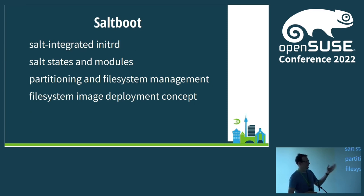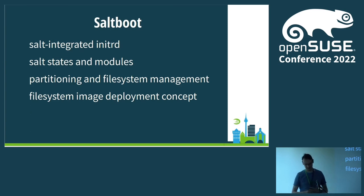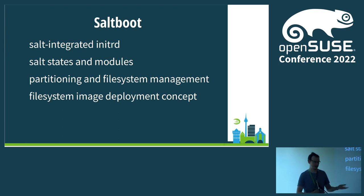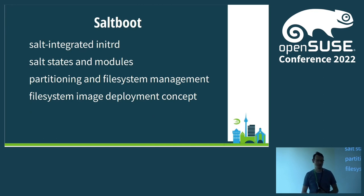Salt Boot uses these salt states to do the partitioning and file system deployment. This is one of many approaches to deploy over the network. Yesterday there was a talk about the magic carpet, which also tries to do the same thing using PXE or network boot to deploy images. This is the same concept except it's based on salt, and the configuration is stored in a different place rather than inside the image itself.